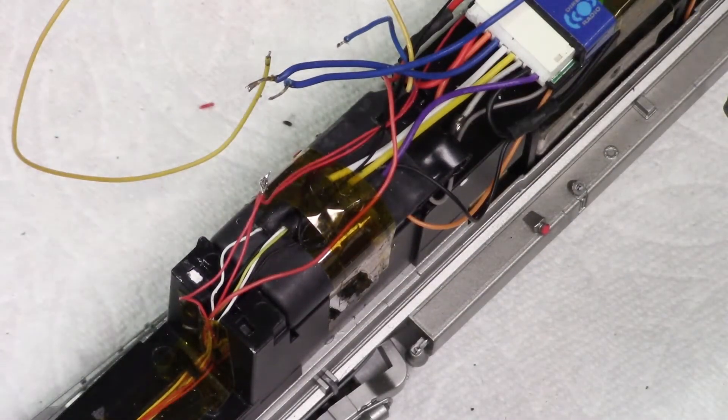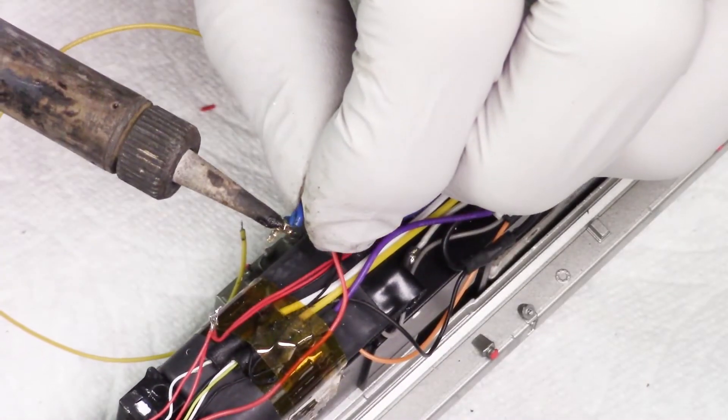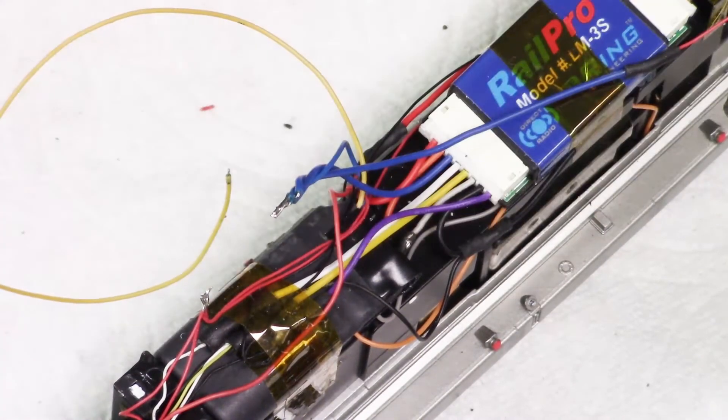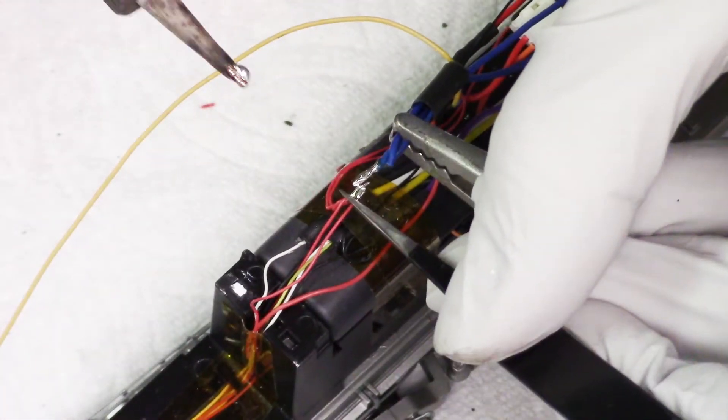All the blue wires need to get hooked together, this is also the positive on all LED lights. They all go to the blue common that goes into the locomotive module. And so I've connected all those wires into one and soldered them all together here.